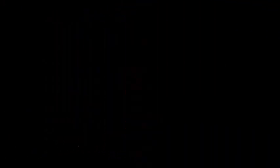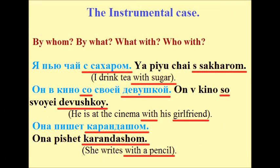Let's look at the following slide. The instrumental case — Творительный падеж. The guiding questions are: 'By whom?' — Кем? 'By what?' — Чем? 'What with?' — С чем? 'Who with?' — С кем?